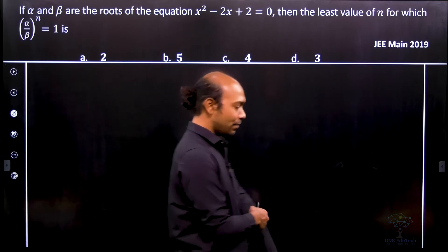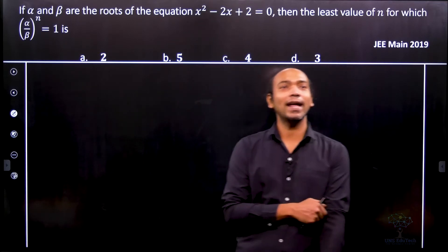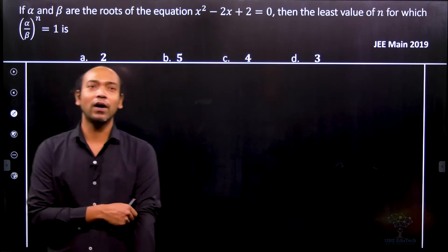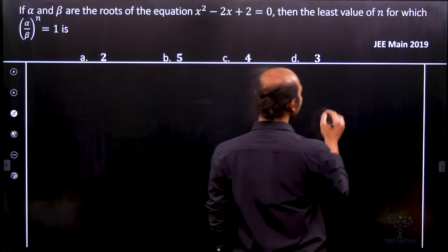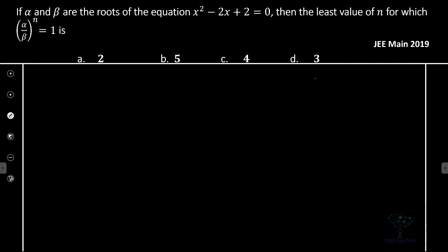Therefore, the roots are definitely complex. We're trying to calculate the values of α and β. Let's consider the quadratic equation: x² - 2x + 2 = 0.